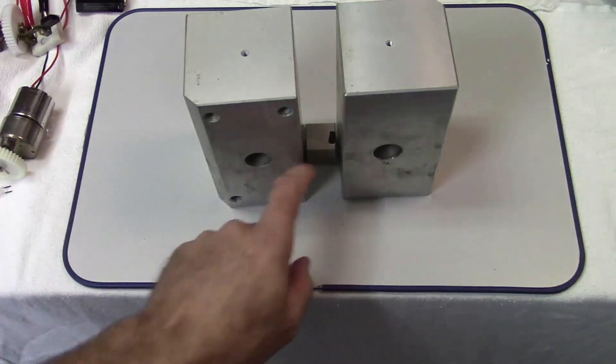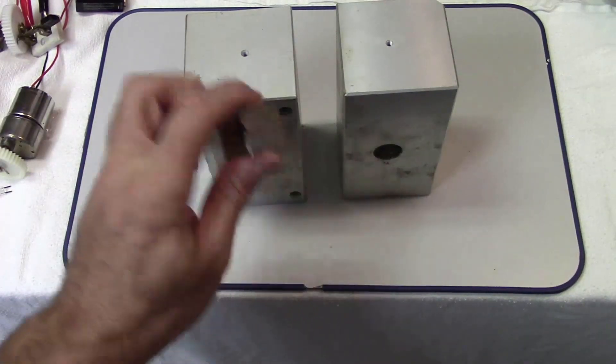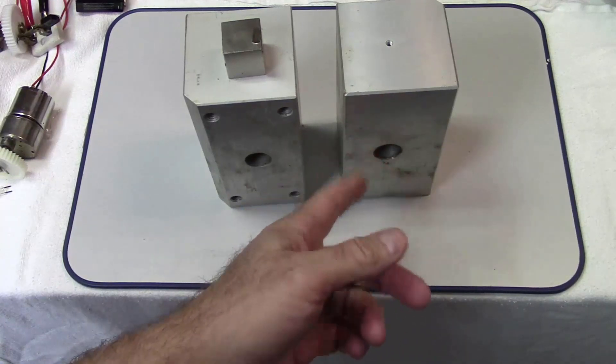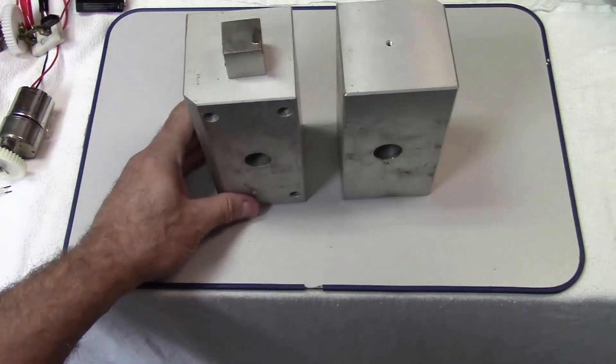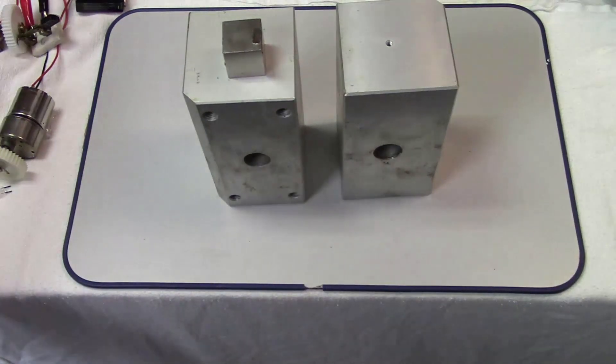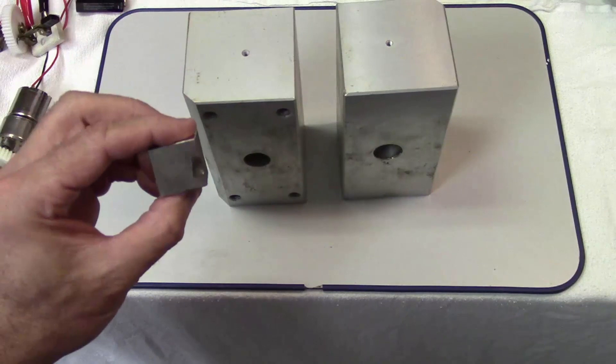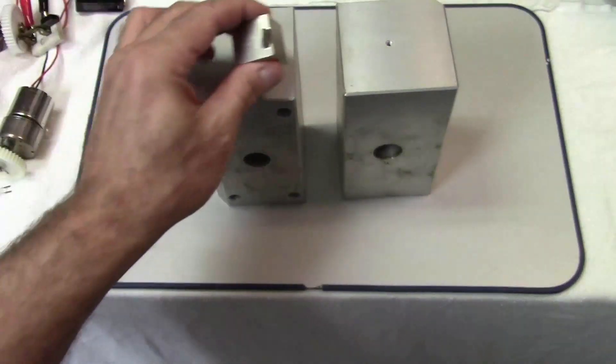And this is because when the magnet falls, it induces large currents inside these aluminum blocks. And these currents are creating a magnetic field that's opposing the magnetic field in the magnet.